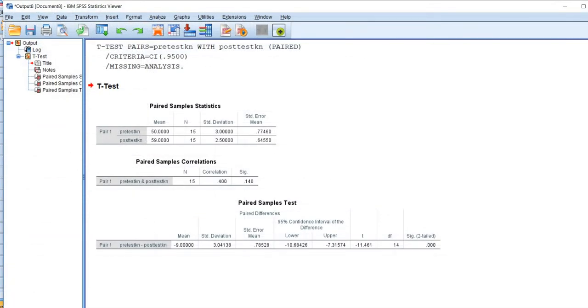You can see here we have our descriptive statistics for pre-test and post-test scores. We have our means, our sample sizes, standard deviations, and then standard errors of the mean for each. We have our correlation between pre-test and post-test scores given right here, and then we have our actual test results given in the table below.